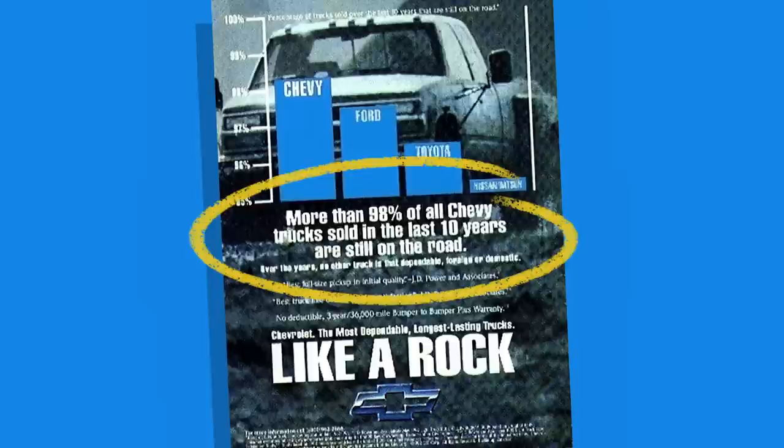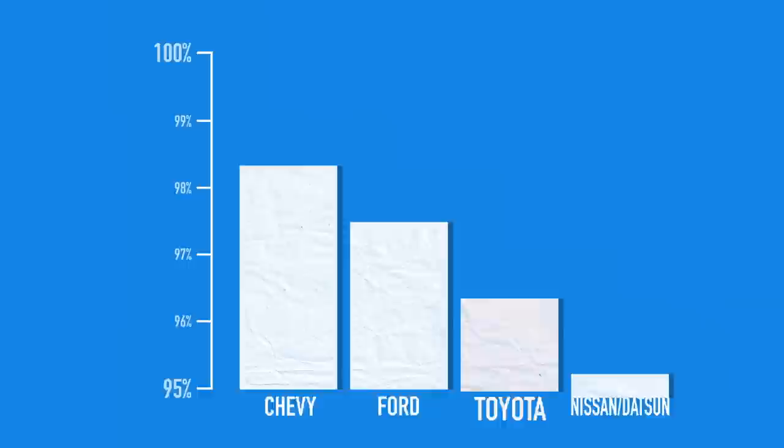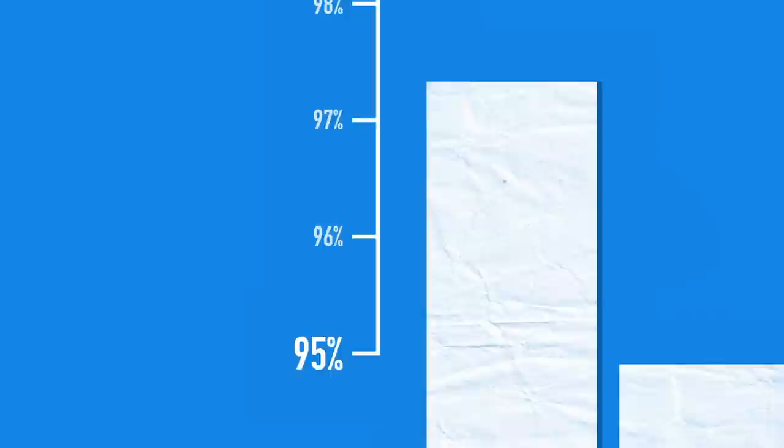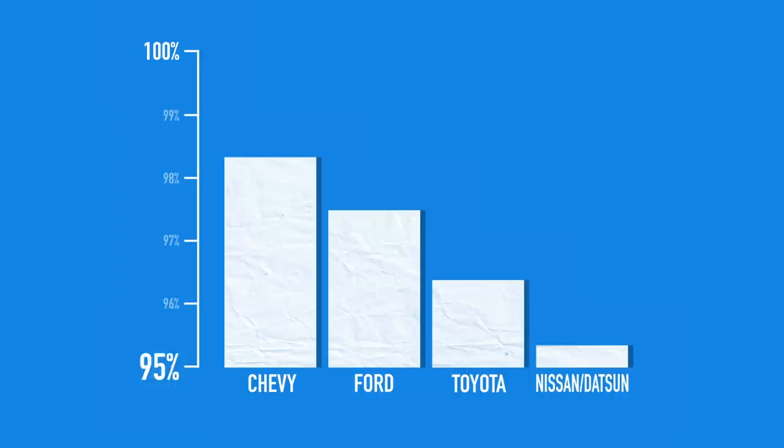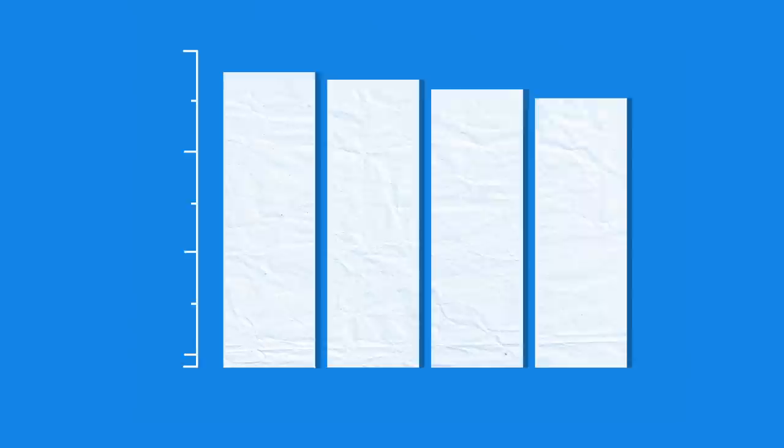In this 1992 ad, Chevy claimed to make the most reliable trucks in America, using this graph. Not only does it show that 98% of all Chevy trucks sold in the last 10 years are still on the road, but it looks like they're twice as dependable as Toyota trucks. That is, until you take a closer look at the numbers on the left and see that the figure for Toyota is about 96.5%. The scale only goes between 95 and 100%. If it went from 0 to 100, it would look like this. This is one of the most common ways graphs misrepresent data — by distorting the scale.